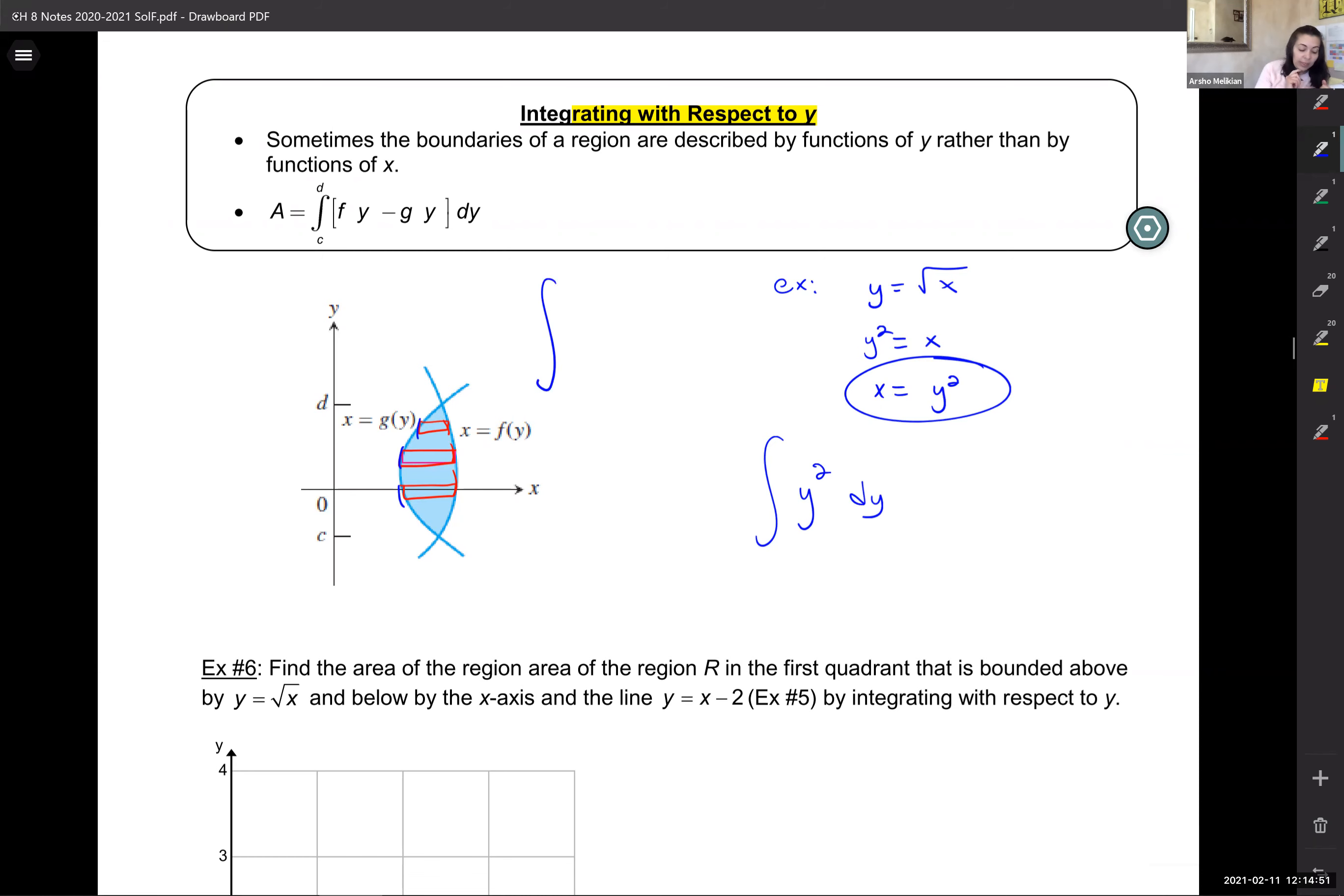Now, remember how before we did the higher function minus the lower function? So, we did upper minus lower. Now, which was the greater function? The greater function is the one on the right. So, now, I do right minus left. And, because all my variables now are y's, I integrate with respect to y. And, what's more is, these boundaries are now also the y values. So, they go from y equals c to y equals d. So, I go from c to d, all right?